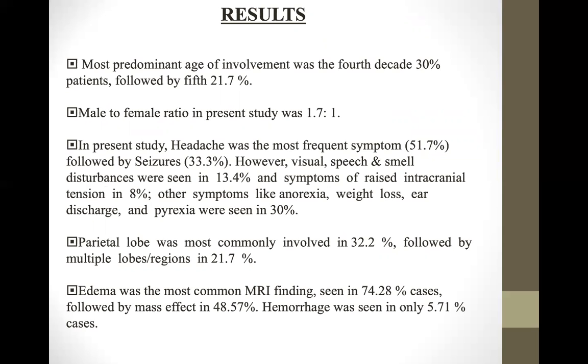The parietal lobe was the most commonly involved lobe, followed by multi-lobar involvement. Edema was the most common MRI finding, followed by mass effect. Hemorrhage was seen in very few patients.